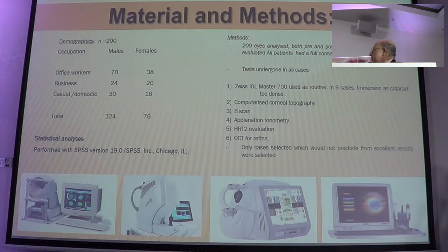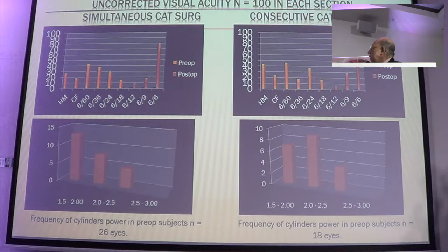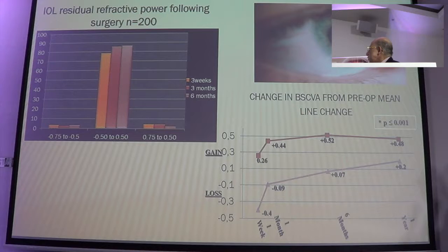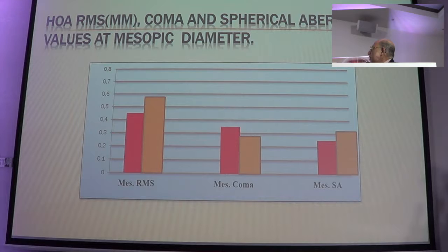A hundred cases done one way, a hundred cases done the other way, following standard procedures and standard tests. On evaluation of the cases, the uncorrected visual acuity in both cases is almost identical. So really there doesn't seem to be much difference between simultaneous and consecutive. The residual powers are almost negligible, and best corrected visual acuity changes are not there.